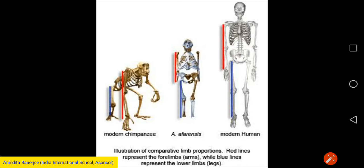Terrestrial animals — animals that live on land — have four limbs. The front limbs are called the forelimbs, and the back limbs are called hind limbs. For example, in human beings, the hands or arms are the forelimbs. Those who are sitting, please stand up — the legs are your hind limbs.